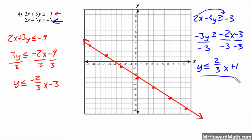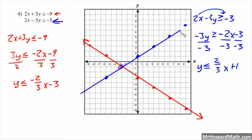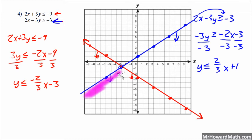For the second blue line, the y-intercept is positive 1 and its slope is up 2 over 3. This one also has an equal to underneath, so it gets a solid line. The blue one is shaded below and the red one is also shaded below, so the sections where they share the shading below lies in this combined section here.